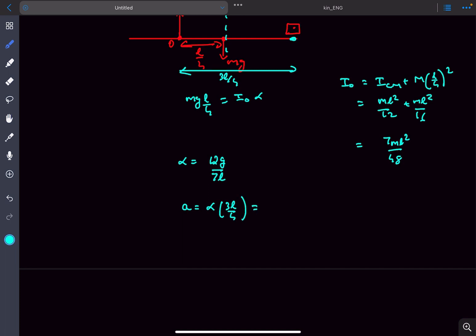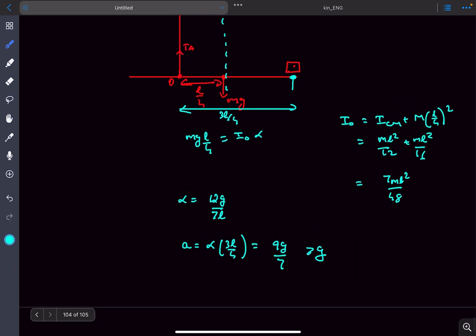This acceleration comes out to be 9g by 7, and as you can see this value is greater than g, which means this point will accelerate faster and this block M will undergo free fall, and hence there won't be any contact.